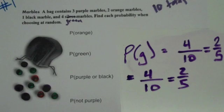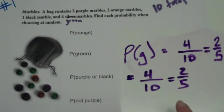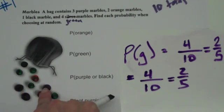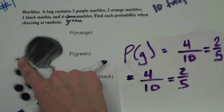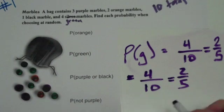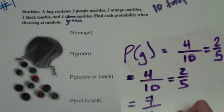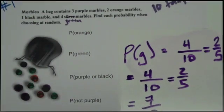This last one says the probability of it not being purple. This is actually called a complement, which basically means that if it's not purple, it has to be everything but purple. So if the probability of getting purple is three out of ten, then for it not to be purple, there are seven marbles that are not purple and we still have ten total. So the probability of getting not purple is going to be seven out of ten.